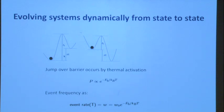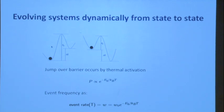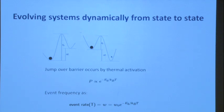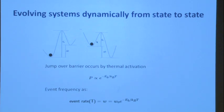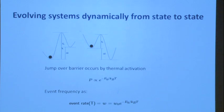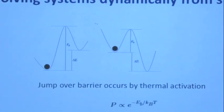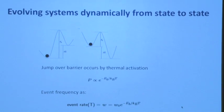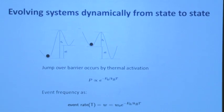What if we want to look at the evolution of the system dynamically from state to state? Think about a potential energy landscape. If your system is here and wants to go there, what is the probability to jump over the barrier? Or if you're on this state, what is the probability to go down to something very stable? When you look at kinetics and reactions, what you really care about is Eb — the height of the barrier you need to pass. The jump over the barrier occurs by thermal activation, and you can define a probability as a function of activation energy: proportional to exp(-Eb/kBT).